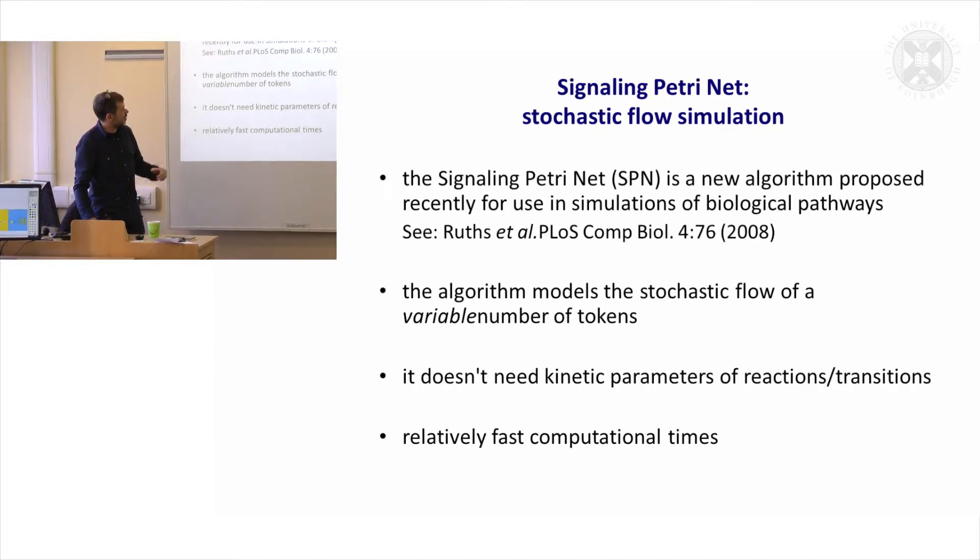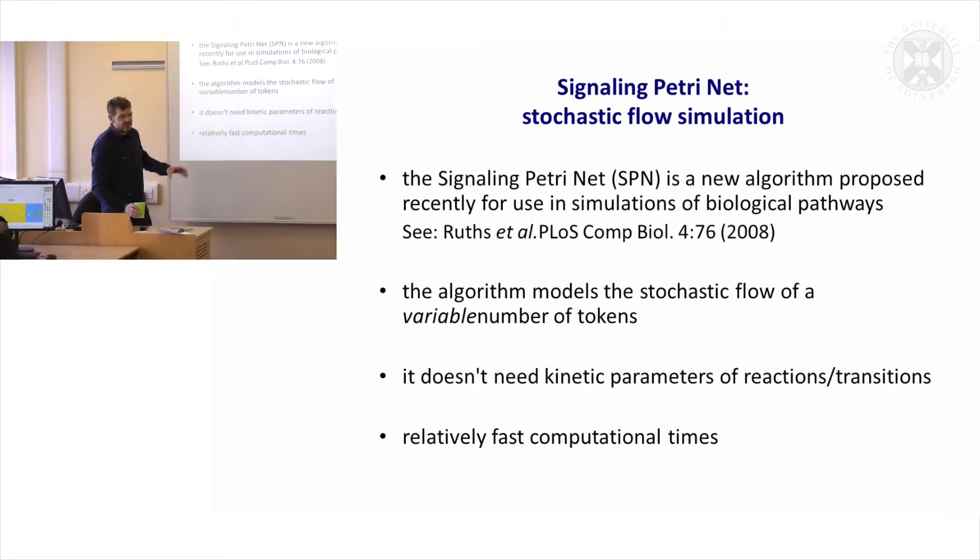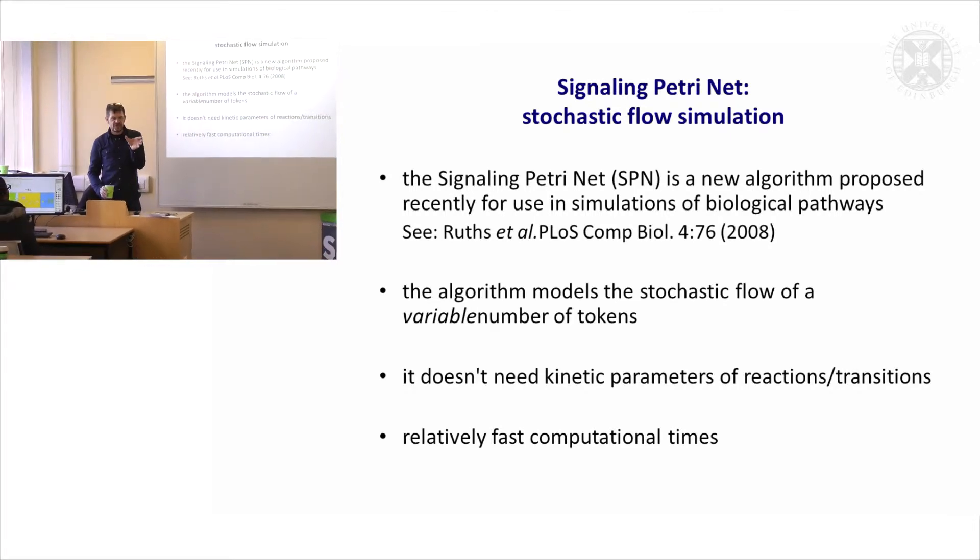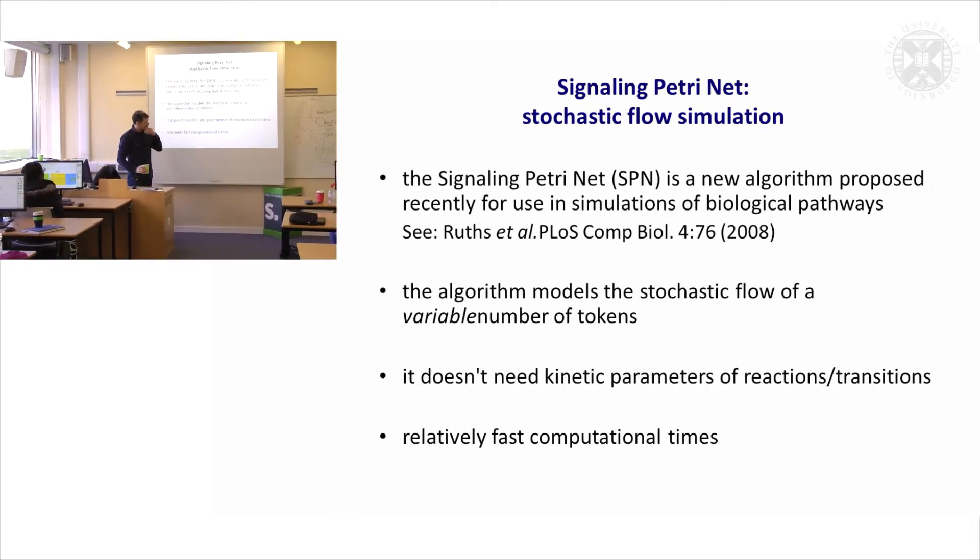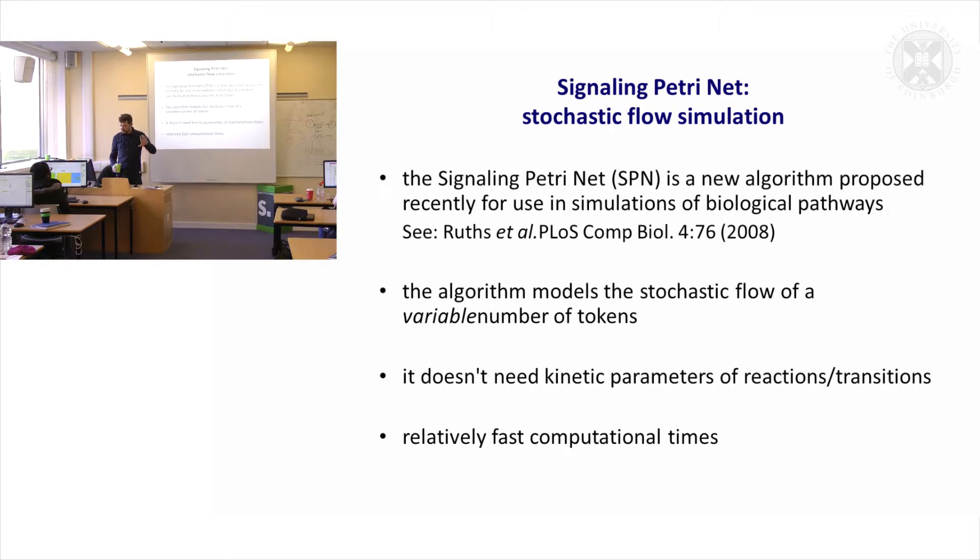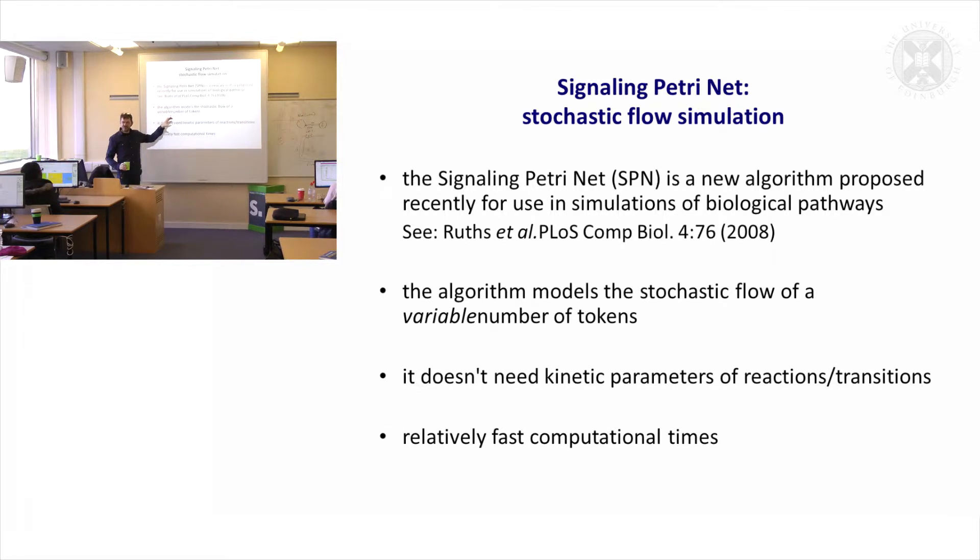There was this paper that came out in PLOS Computational Biology in 2008, and it reported a new algorithm for running Petri nets called the Signaling Petri Net Algorithm. It's a very nice paper, and if you want to know more, I would suggest you read about it. It will explain something of the maths behind it and the assumptions and how this algorithm compares to other modelling approaches.